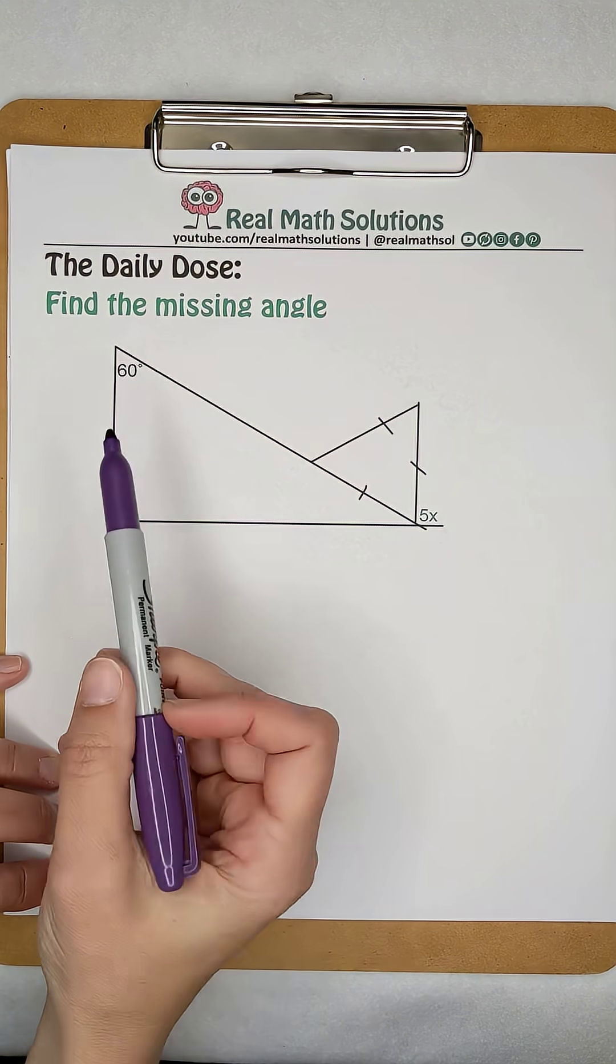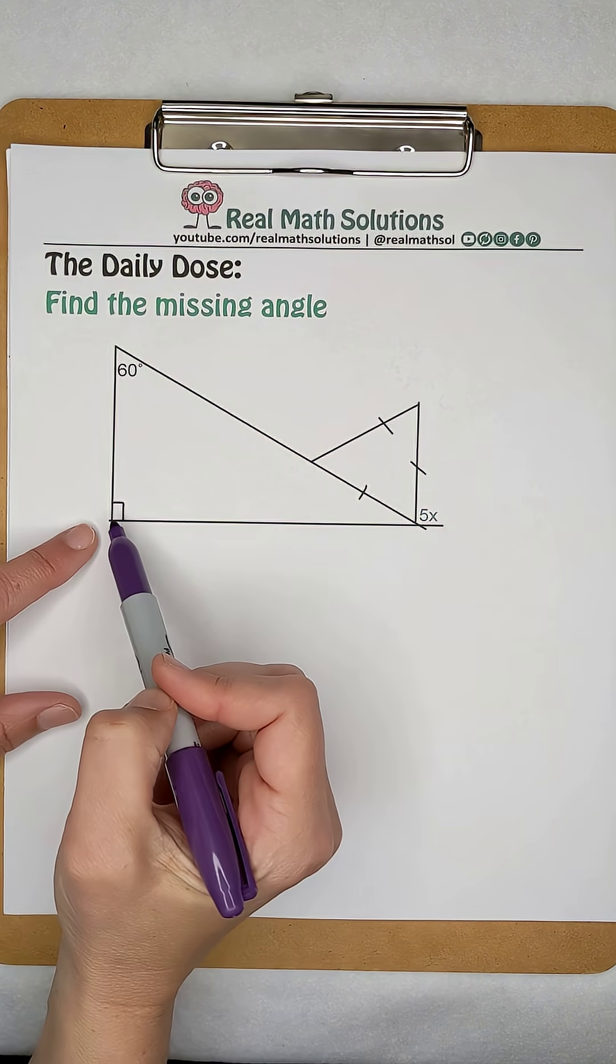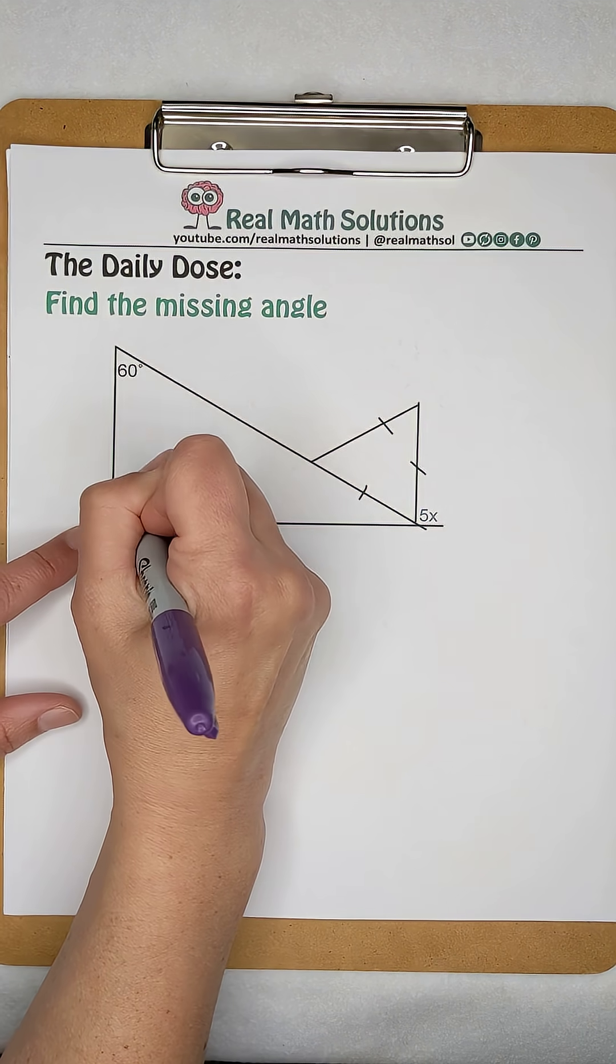Let's use what we know to find the value of x. We know this angle is 60 degrees. This angle is labeled as a right angle, so it's worth 90 degrees.